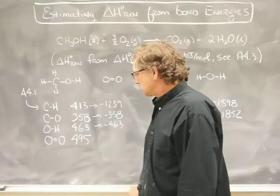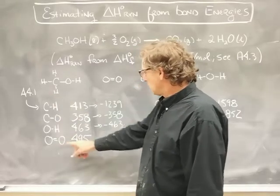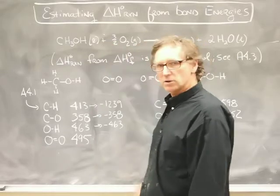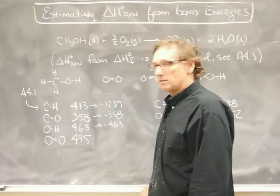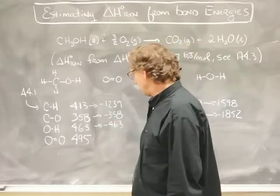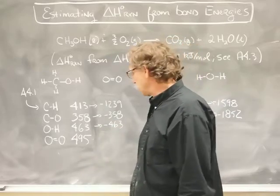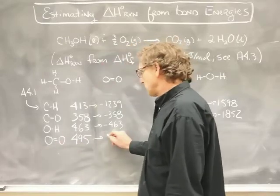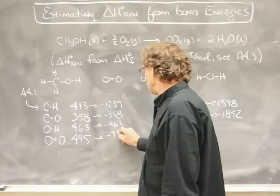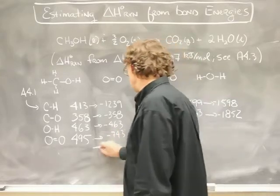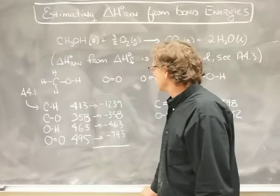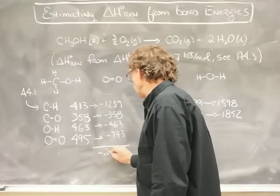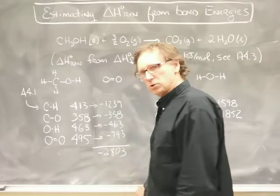How about the oxygen-oxygen double bond? A4.1 lists the bond strength as 495, but we have 1.5 equivalents of those. So I need to multiply this by a negative number to get the bond energy, and also multiply by 1.5 because of that factor, which comes to minus 743. Now I can add up all the bond energies of the reactants, which comes to minus 2803 kilojoules per mole.